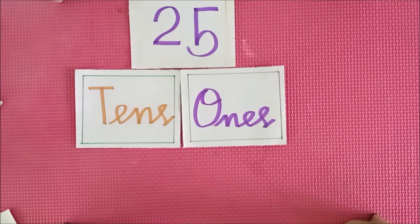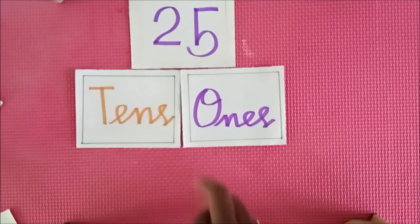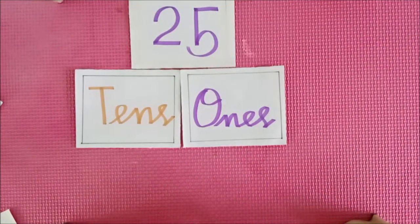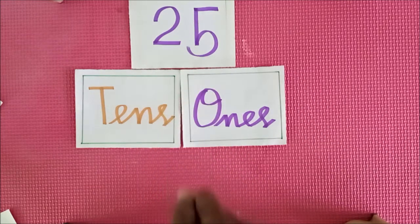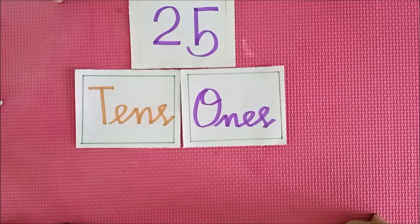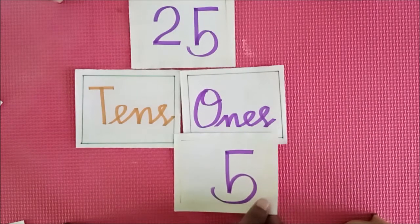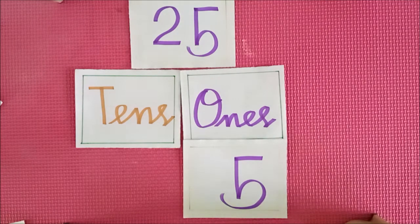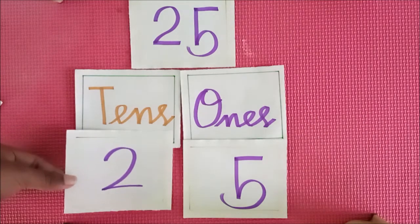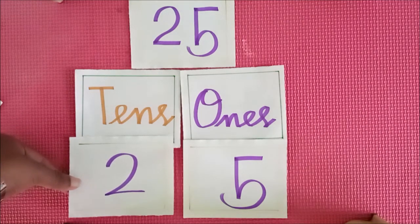Next, see here — what number are you seeing? 25. In 25, how many 1s are there? There are 5 ones. And how many 10s are there? 2 tens.